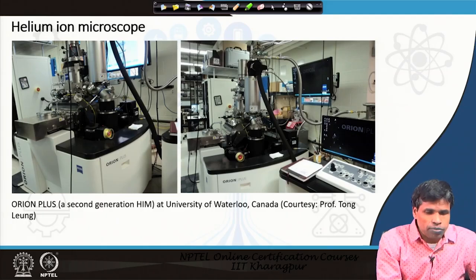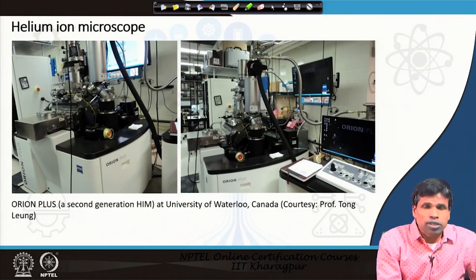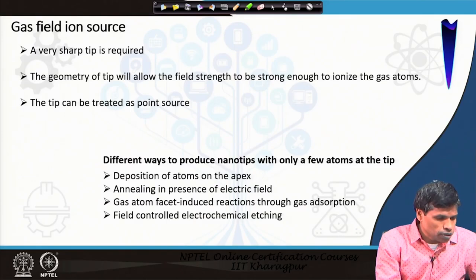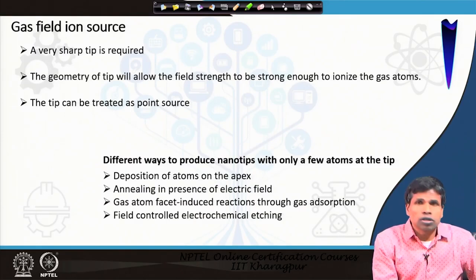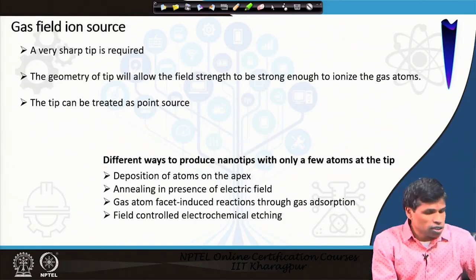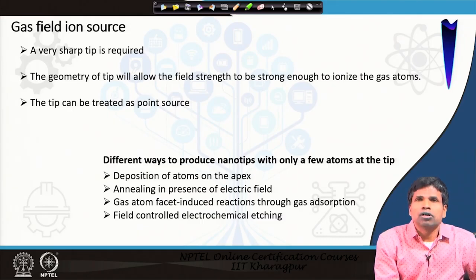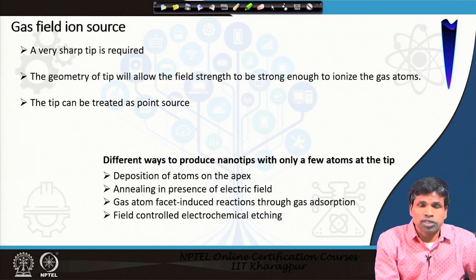This type of helium ion microscope uses a gas-filled ionization source for microscopy purposes, and its resolution for nanofabrication is also very good — in the range of sub-nanometer, around less than 10 nanometers.